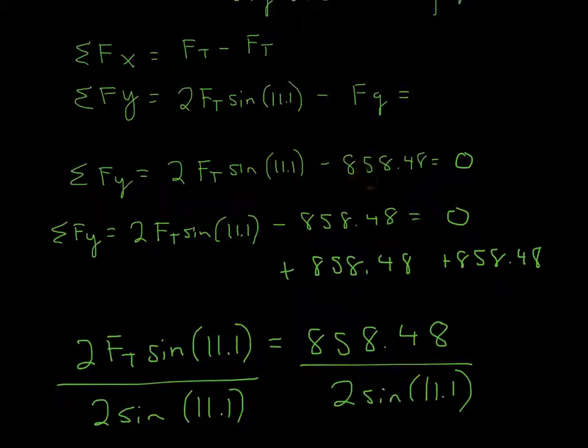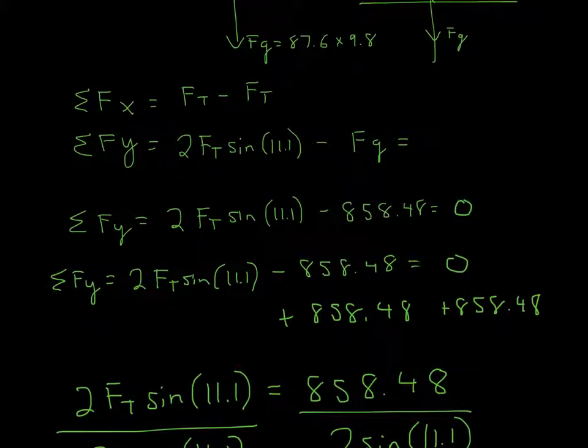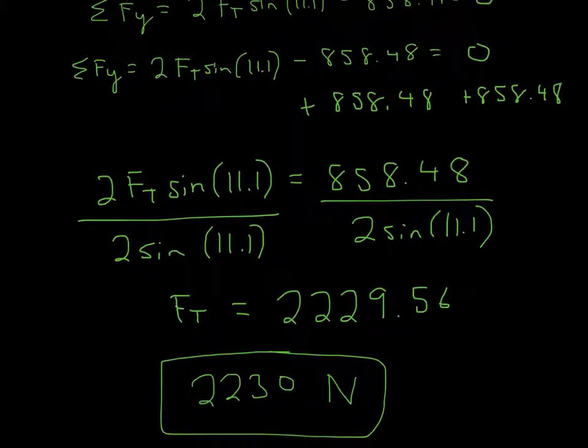So all I did here, once again, was just multiply this out to get 858.48. And since I set it to zero, I just added that number to either side. And then after that, just solve for force of tension. So divide by 2 sine 11.1. And then you get force of tension is equal to 2,229.56.